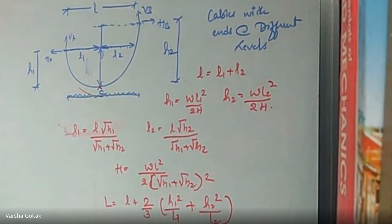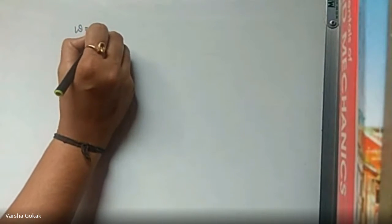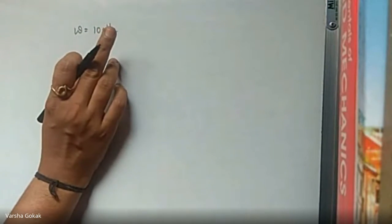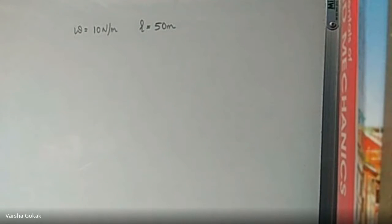These are the equations we will use to analyze the cable with supports at different ends. Let us take up the first example. A flexible cable weighing 10 Newton per meter (UDL) hangs between two supports which are 50 meters apart, so L equals 50.